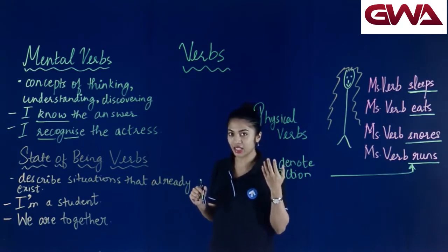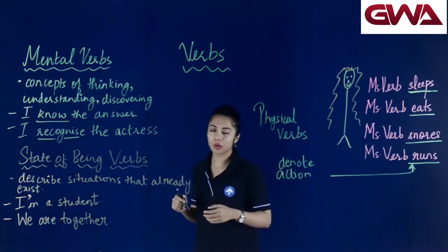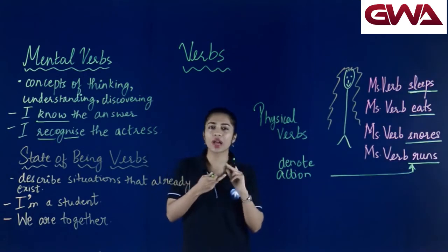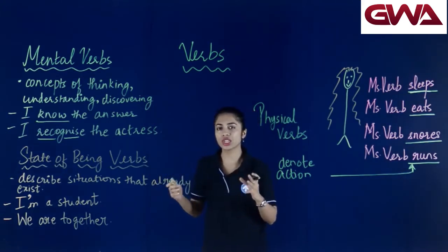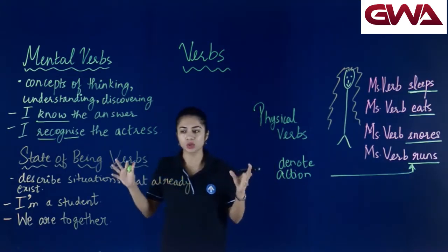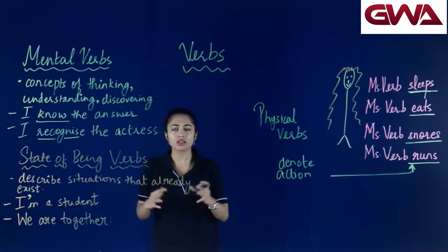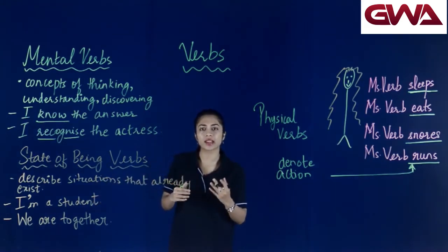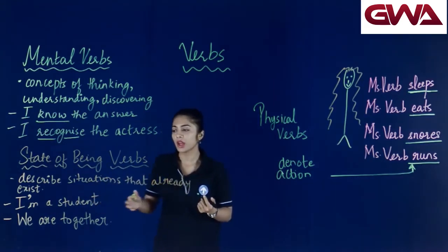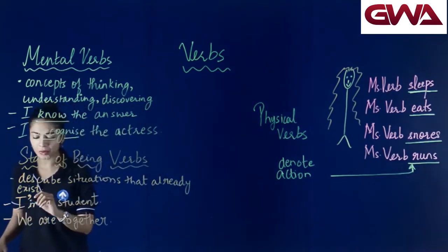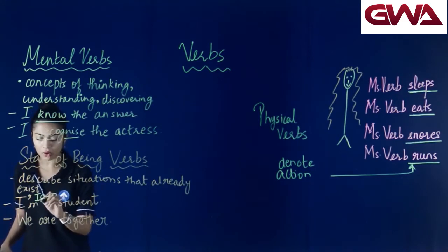Next category of verb है state of being verb. State of being verbs क्या करते हैं — basically वो कोई action denote नहीं करते, वो just कहते हैं कि यह जो situation है वो already exist करती है। इसे example से better understand करने के लिए: I am a student and we are together. तो यहाँ पे verb है I am.